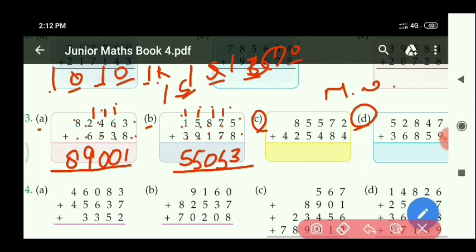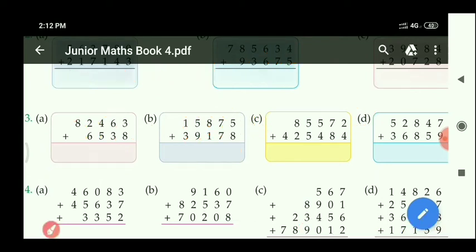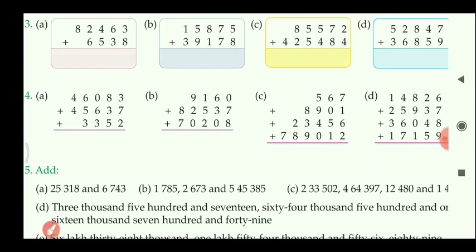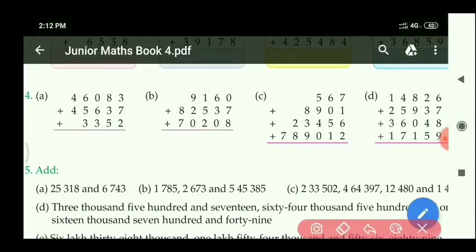Now let us look at question number 4. At the 1's place: 10 plus 2 equals 12 — 2 digits, so write 2. Carry 1 goes to the 10's place. At the 10's place: 8 plus 3 equals 11, then 11 plus 5 equals 16, with carry 1 equals 17 — right side digit is 7, write 7.